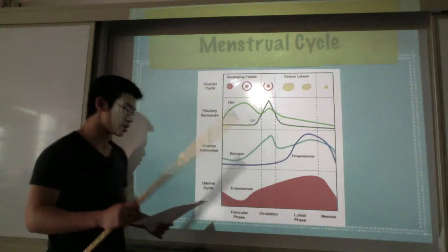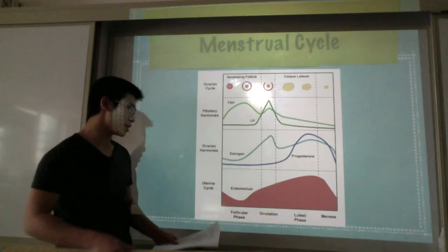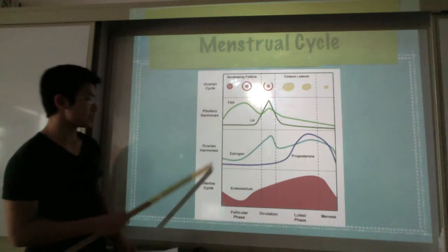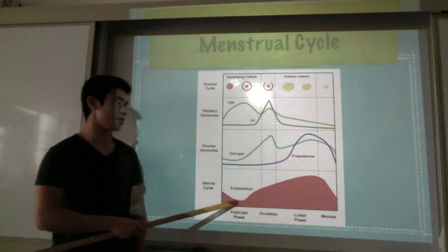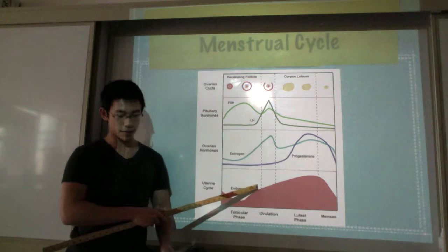Estrogen also stimulates the development of the endometrium, so as you can see here, when estrogen goes up, the endometrium also goes up.